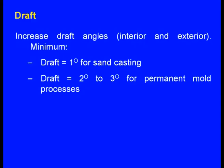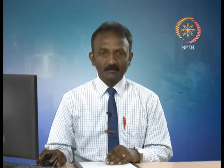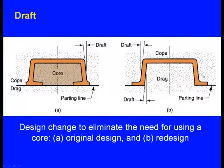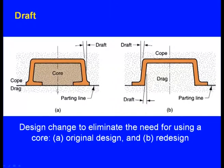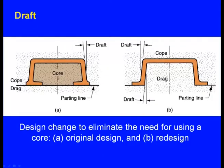For draft: increase draft angles on both interior and exterior. The draft angle should be 1 degree for sand casting and 2 to 3 degrees for permanent mold or die casting processes. The design should be changed to eliminate the need for using a core, making core removal easier.